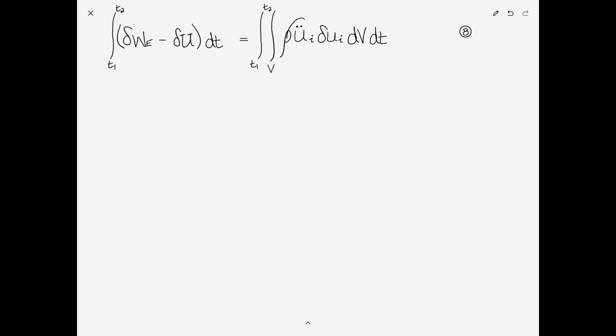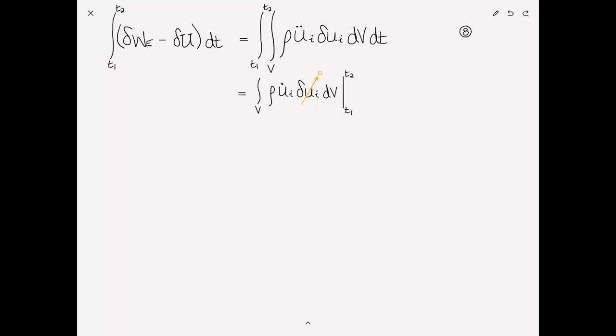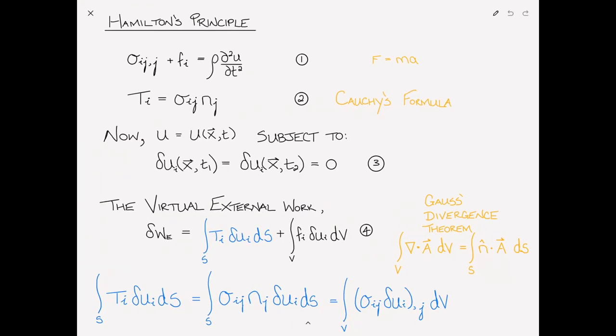So, what I want to do if I integrate this by parts, and the idea is I want to transfer this derivative to the del U, is first of all, I remove one of the dots, and I write the boundary term. So, it's the integral over the volume of rho Ui dot, just one dot now, times this, del Ui, dv from T1 to T2. And I remind you that this term is zero at both T1 and T2. This was an assumption we made on the first page, that part of having a kinematically admissible displacement field requires us to set the variation to zero at both of the boundaries.